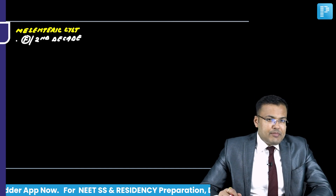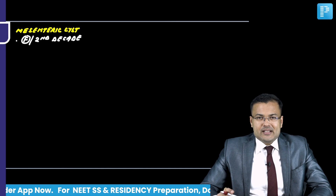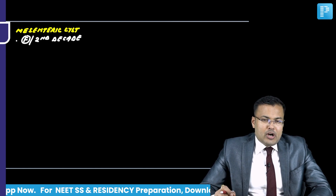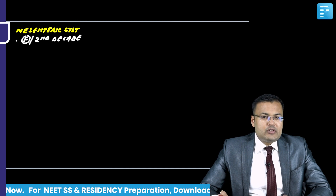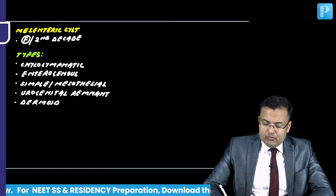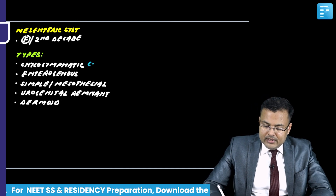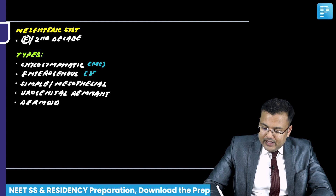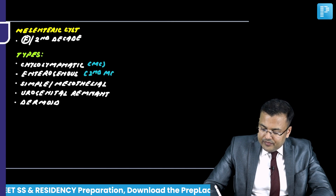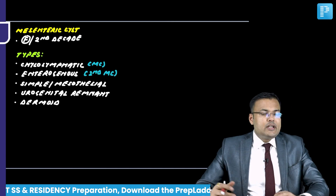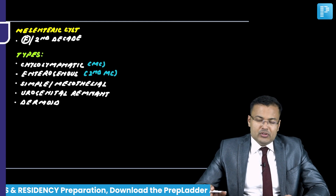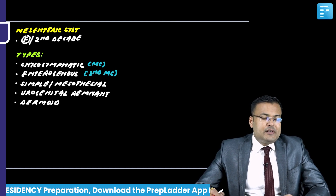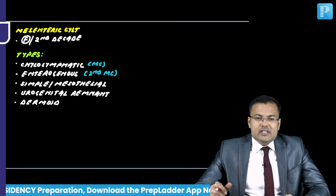What is the most common type of mesenteric cyst? It is chylolymphatic, and the second most common is enterogenous. The types are: most common - chylolymphatic; second - enterogenous; third - simple or mesothelial; fourth - arising from urogenital remnant; and fifth - dermoid.